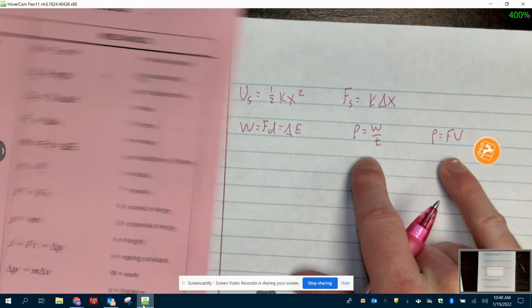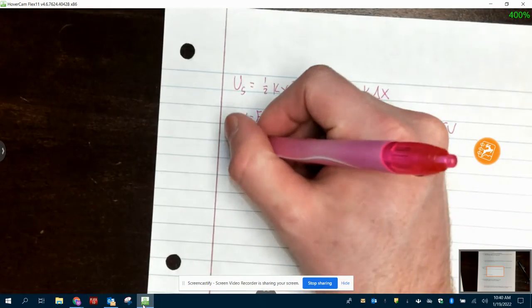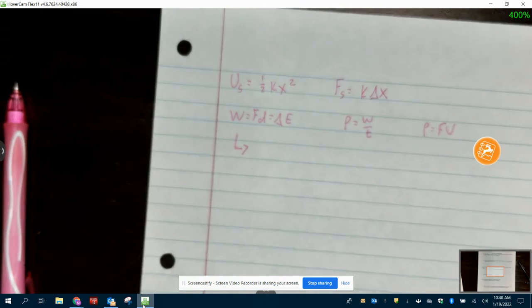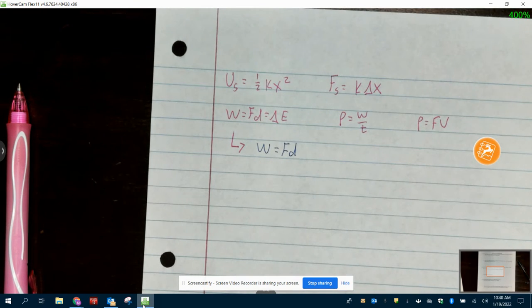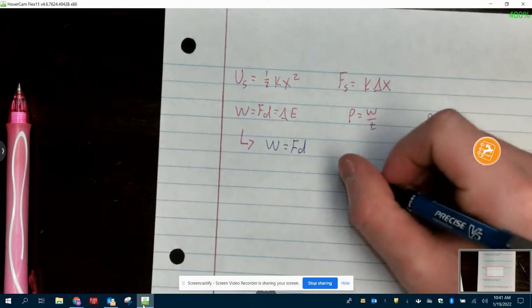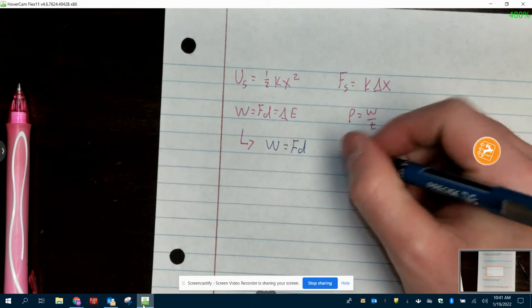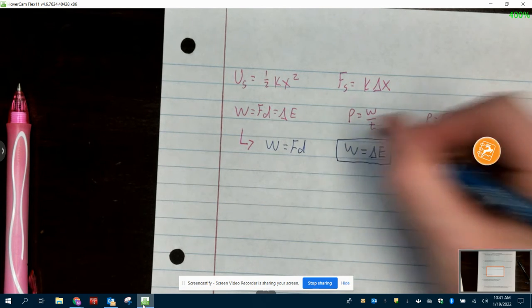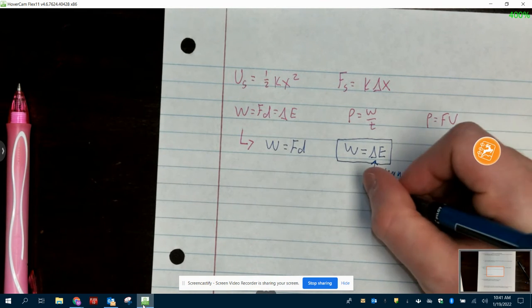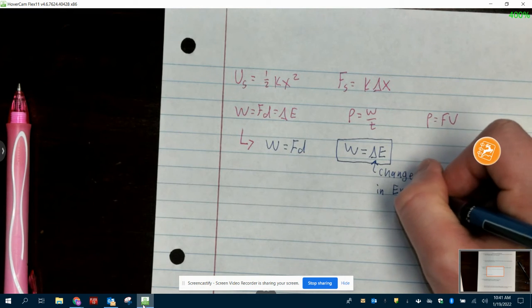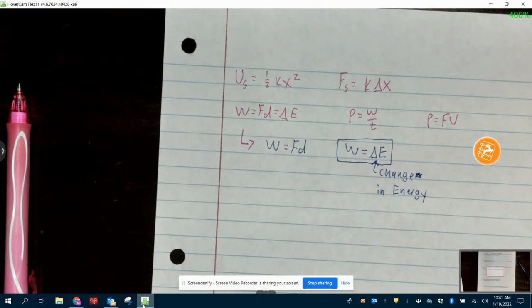These two are really straightforward. You only use them when you're given those variables, but this work one, think of it this way. It splits into two equations. It is either saying work is equal to a force times a distance. If you're pushing something and it moves a distance in the direction you're pushing it, what I mean by that is, if you push it to the right and it moves to the right, then you multiply those two to get the work done. The other way, and the more important way, is that work is equal to delta e. What is delta e? Change. So this is the change in energy.